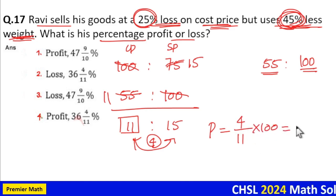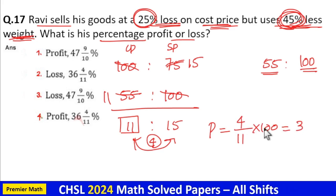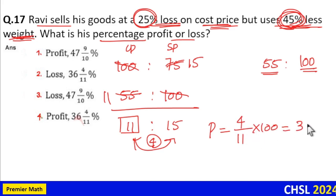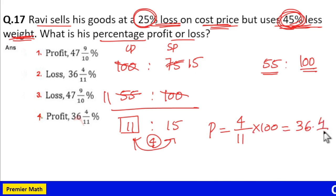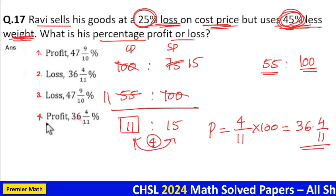Now 400 by 11 means 11 goes 3 times in 40 remaining 7, 11 goes 6 times in 70 remaining 4. So 36 and 4/11, option 4 is the answer.